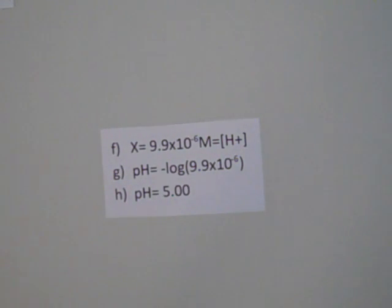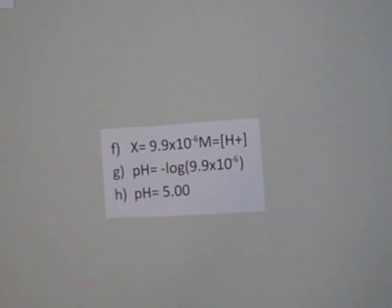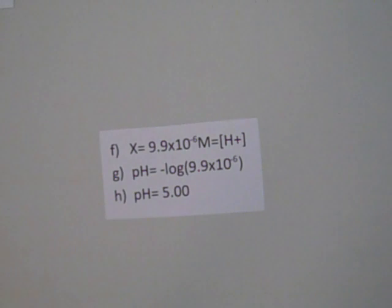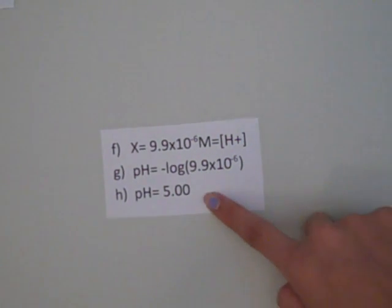This is the hydrogen concentration, because at equilibrium the hydrogen concentration is X molar. Taking the negative log of 9.9 times 10 to the negative 6th, we find that the pH is 5. So the pH of a 0.20 molar solution of HCN is 5.